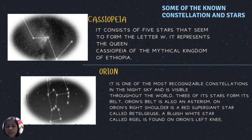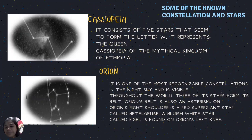Three of Orion's stars form its belt — Orion's Belt is also an asterism. On Orion's right shoulder is a red supergiant star called Betelgeuse. A bluish-white star called Rigel is found on Orion's left knee.